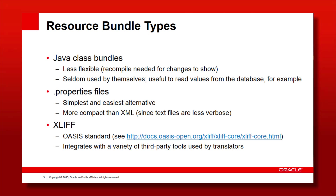Java class resource bundles, however, are very useful if you want to fetch the text strings from a database or from another kind of infrastructure, and then you can write code in the class to fetch the various text strings. The second resource bundle type supported by ADF and JDeveloper are properties files. Properties files are very common in the Java world — they are very simple and easy to use because they are just key-value pairs, and they are more compact than XML, giving you a slight performance advantage.